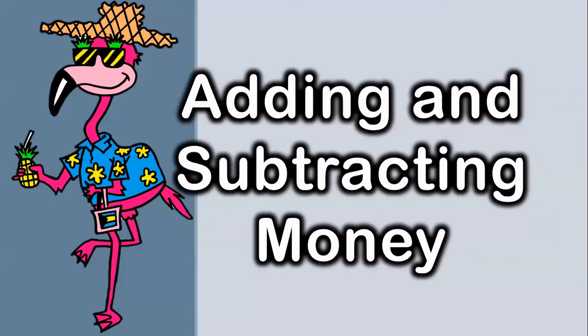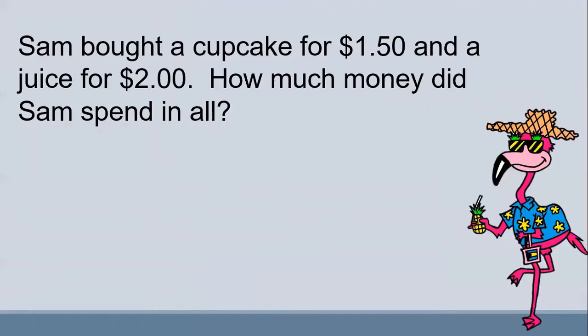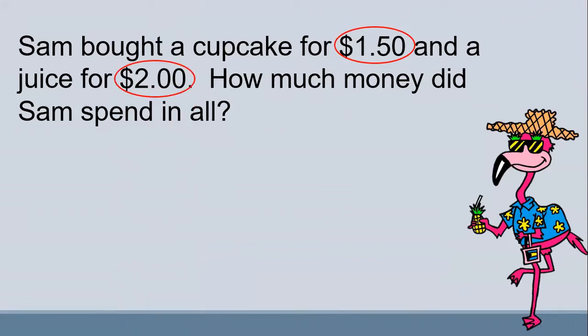Let's get started. Sam bought a cupcake for $1.50 and a juice for $2. How much money did Sam spend in all? Let's circle $1.50 and $2. We're going to add those two amounts together.